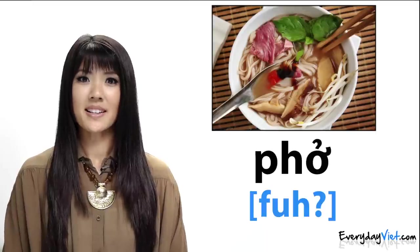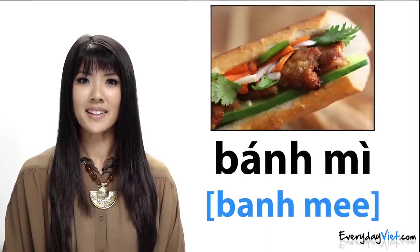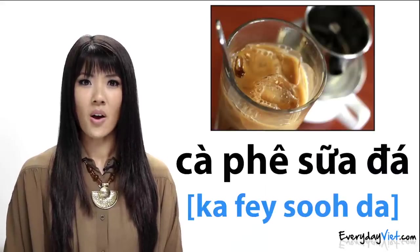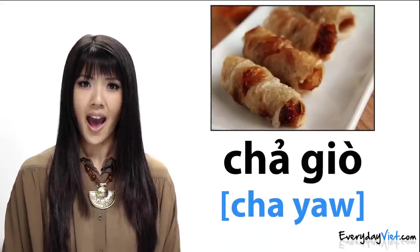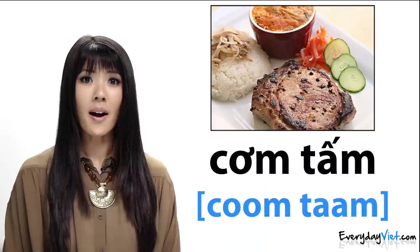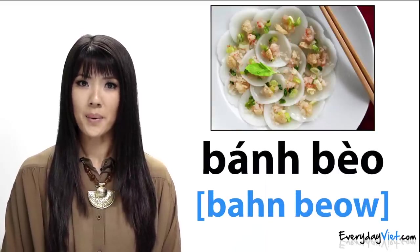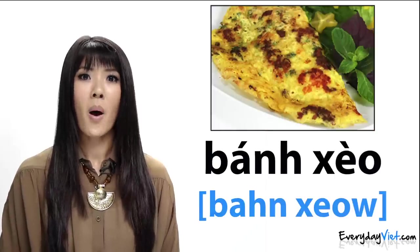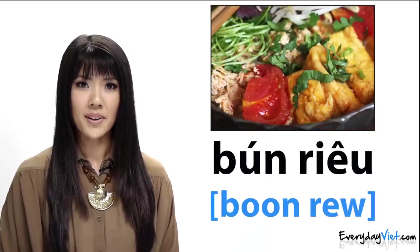The first item is phở, bánh mi, cà phê sữa đá, gỏi cuốn, chả giò, cơm tăm, bánh bèo, bánh xèo, bún bò huế, bún riêu.